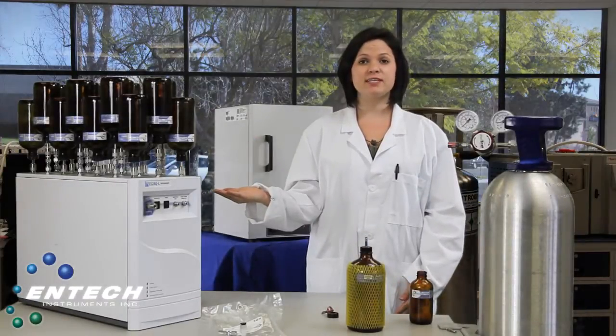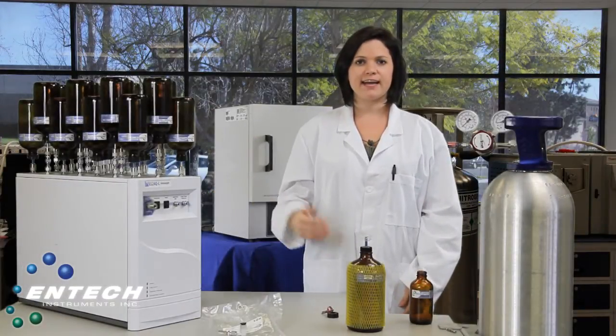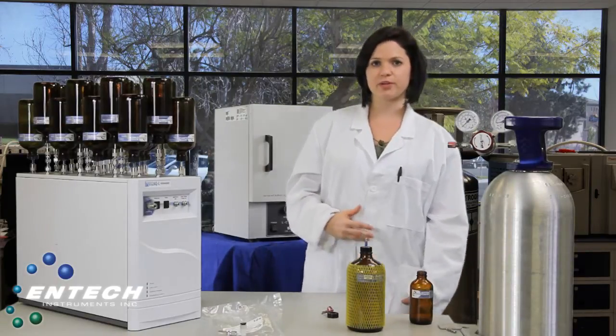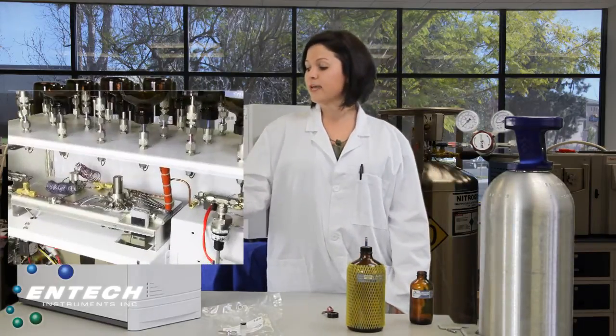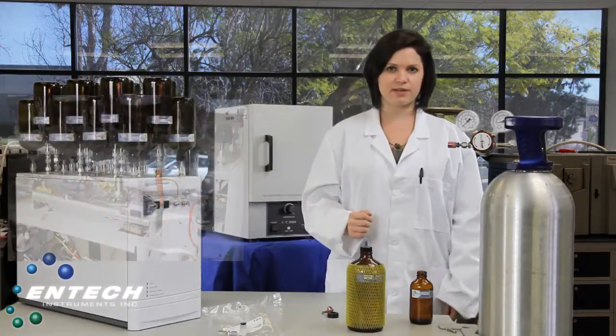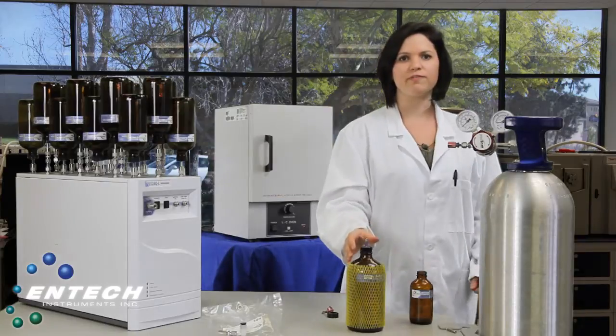This auto sampler is an accessory to any GC. It analyzes up to 21 samples unattended. Internal to a loop injection auto sampler is a sample select system and a loop valve. At the time the sample is selected, there must be a force that transfers the sample from the bottle back to the loop.